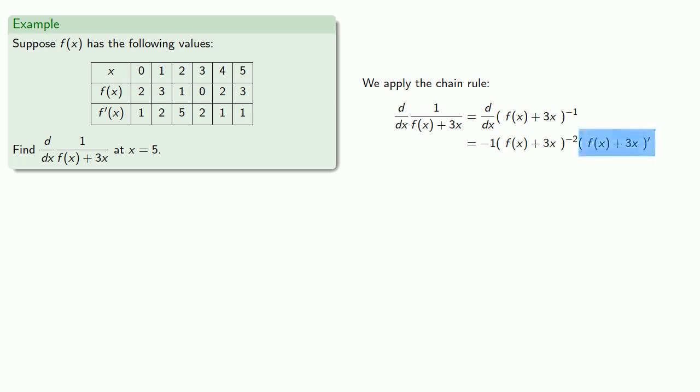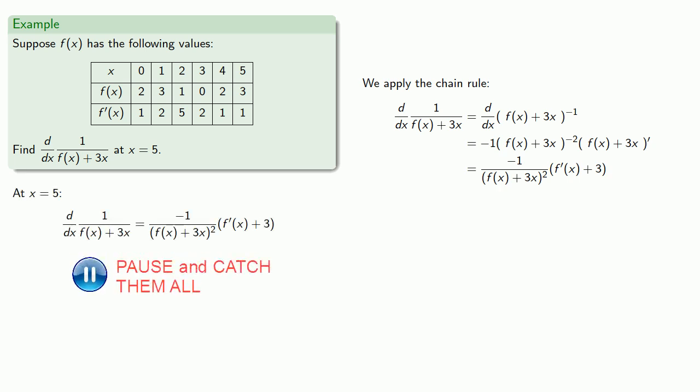We still have one more derivative to evaluate. So we'll differentiate. And we'll rewrite this slightly to make it easier to evaluate. And at x equals 5, we know these values. Which will give us the derivative.